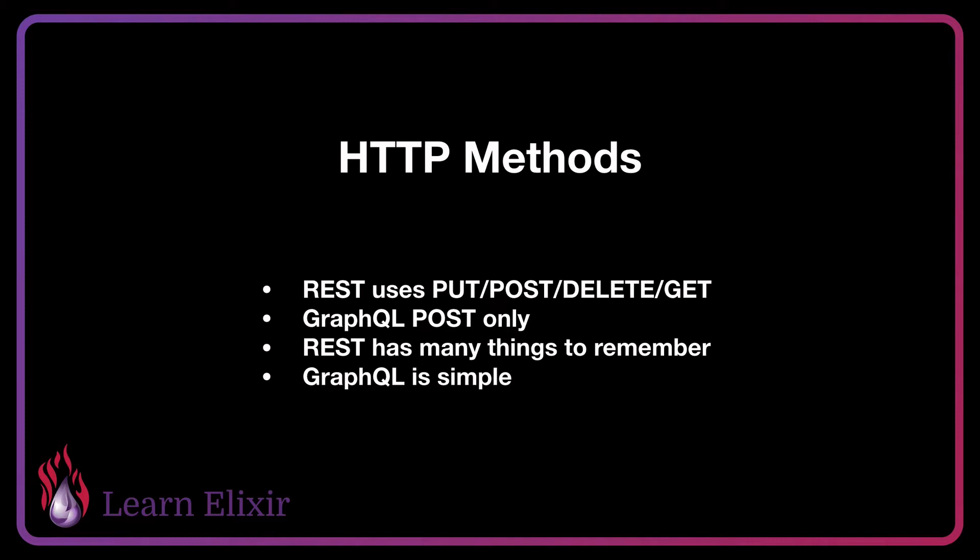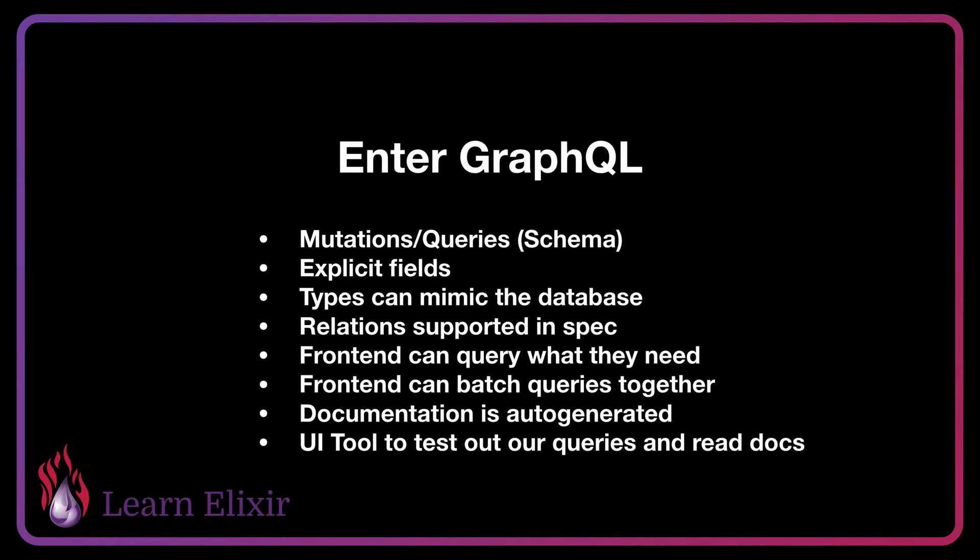In GraphQL, this is different because we actually only use POST, and all of our API hits go to POST with a different query or a different mutation. REST has a lot of different things to remember, including all the HTTP methods and all the methods that you create in which objects, whereas GraphQL is quite simple and really only has one way to do things, with objects designated for your database models.